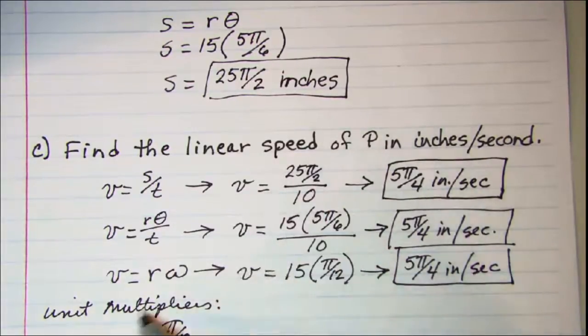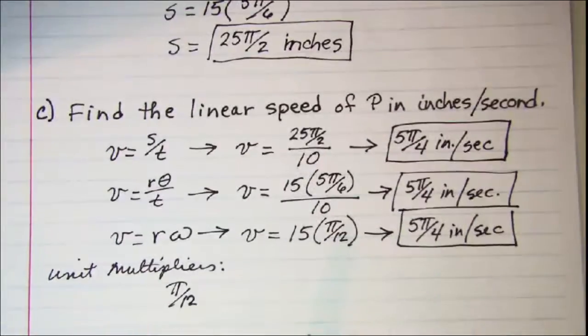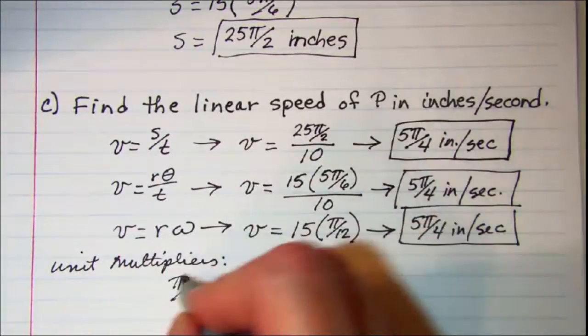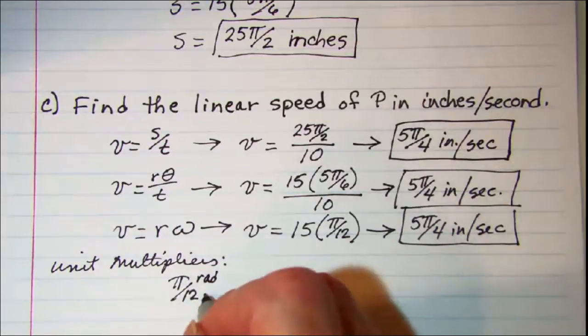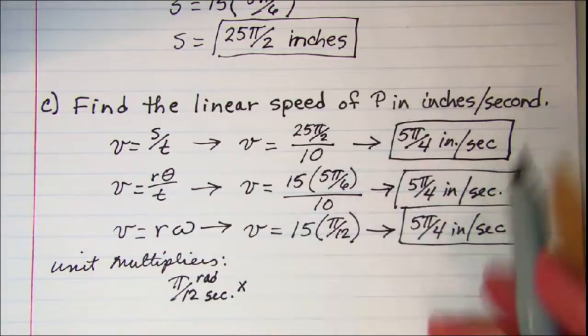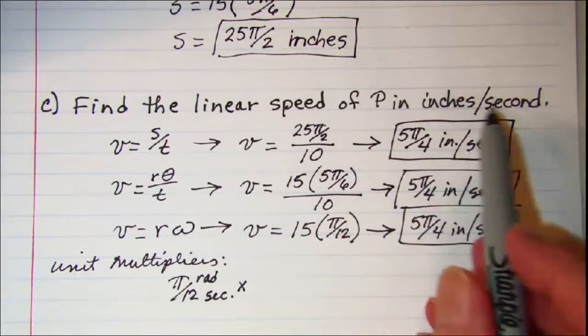And remember when you use unit multipliers you need to put the units on there. So it's π radians per 12 seconds. Now we know that we want to go to inches per second.